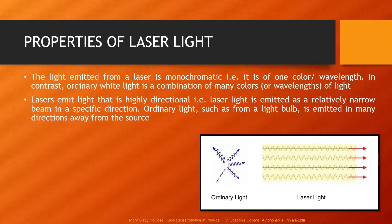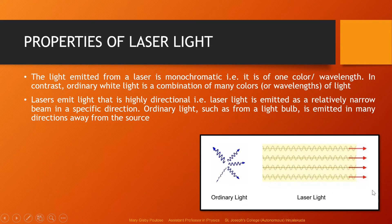Lasers emit light that is highly directional — laser light is emitted as a relatively narrow beam in a specific direction. Ordinary light, such as from a light bulb, is emitted in many directions away from the source. Laser light travels in a particular narrow direction whereas ordinary light spreads in almost all directions.